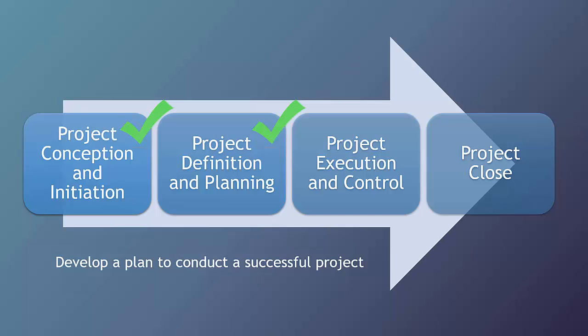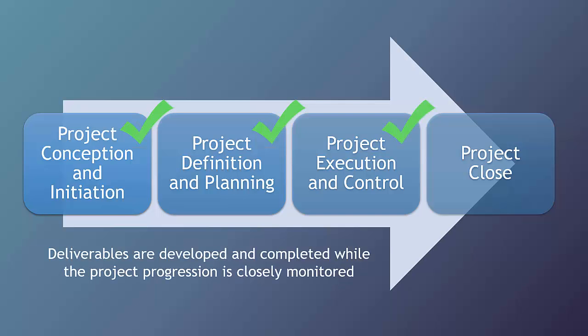Here you'll learn about the various planning steps you should complete, including creating a project schedule and defining the communication, quality, and go-live requirements. The third stage is all about project execution — this stage focuses on teaching you how to appropriately monitor the project by identifying and mitigating risks.